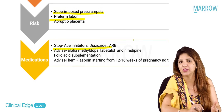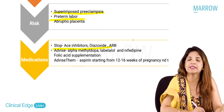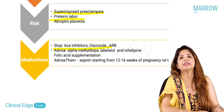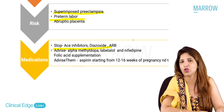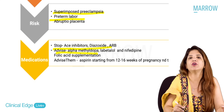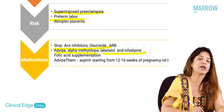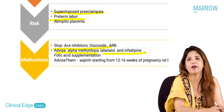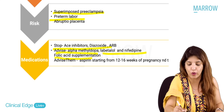As part of preconceptual counseling in chronic hypertensive patients, analyze what antihypertensives she is on. ACE inhibitors, angiotensin receptor blockers, and diazoxide are contraindicated in pregnancy. Stop these and replace with safer alternatives. Williams states there is no single drug of choice; three first-line options are oral methyldopa, oral labetalol, or oral nifedipine.